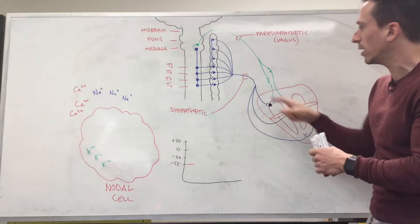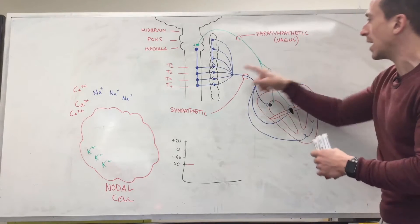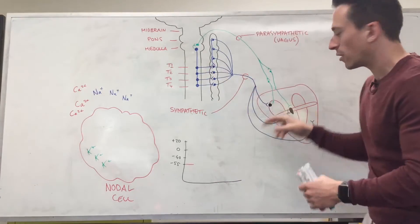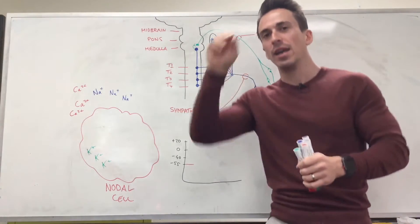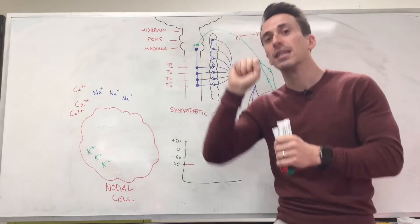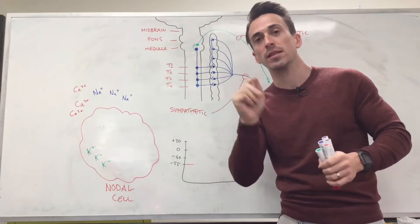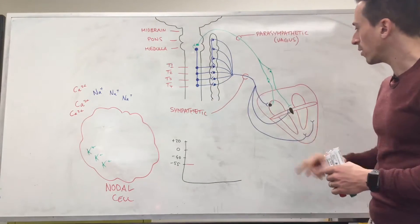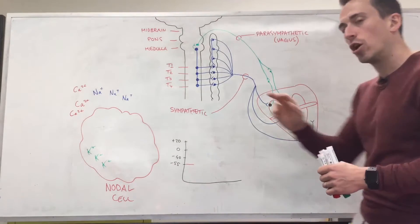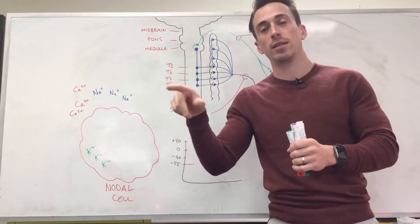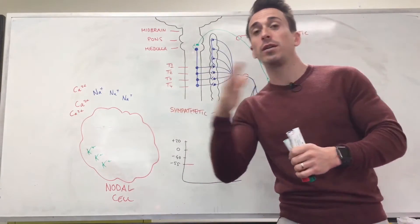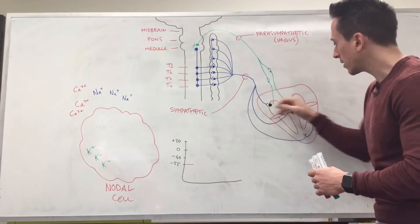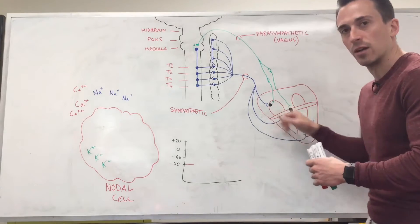It innervates the SA node, the AV node, and the myocardium of the ventricles. The SA node sets the rhythm of the heart—it spontaneously sends signals between 70 to 100 times a minute. This is what sets the pace or rhythm of your heart. The AV node, if the SA node cramps itself, will kick in and spontaneously depolarizes around 40 to 60 times a minute, so a little bit slower. That's the reason why the SA node sets the rhythm, because it just does it faster than the AV node.